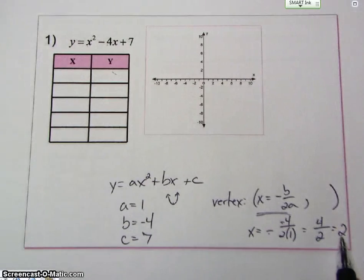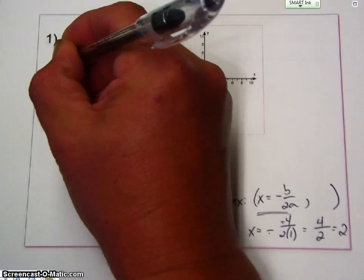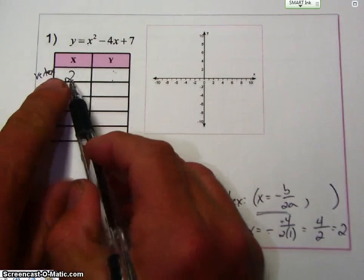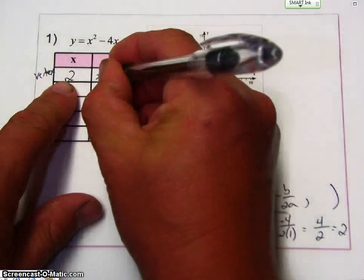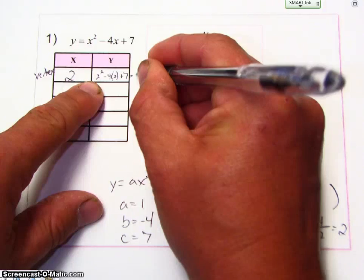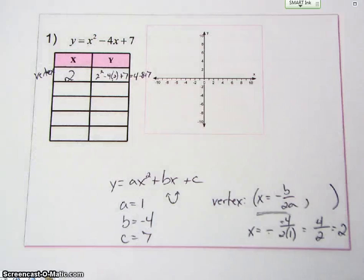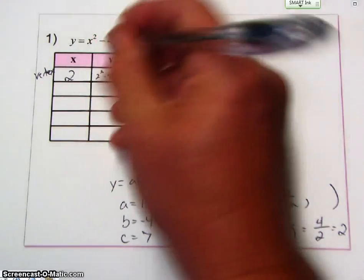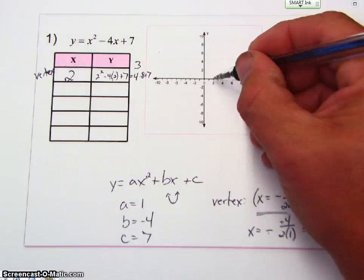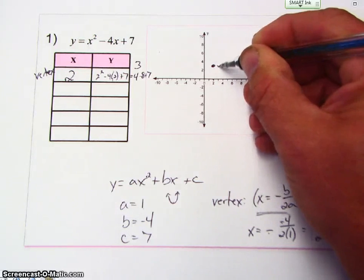So the vertex X coordinate is 2. Now to find the Y coordinate, I take 2 and I plug into here. So that becomes 2 squared minus 4 times 2 plus 7. So that's 4 minus 8 plus 7, which gives me 3.